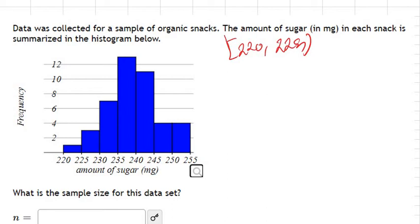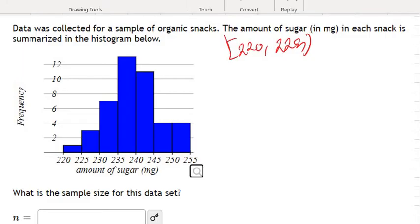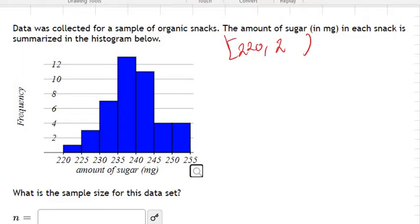But sometimes we just subtract one from here and we say this is 224, especially if this is discrete values and we close the parentheses on both sides. So these numbers at the bottom represent the lower class limits.